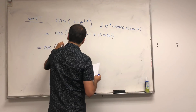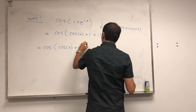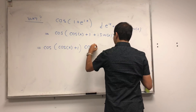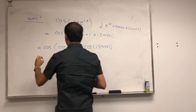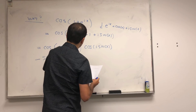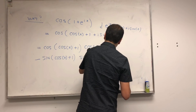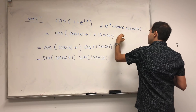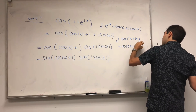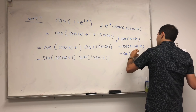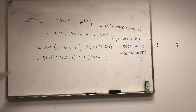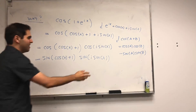So let's just use the sum law for cosine. That's the same thing as cosine of cosine of x plus 1, cosine of i sine of x, minus sine of cosine of x plus 1, sine of i sine of x. That's just cosine of a plus b, which is cosine a cosine b minus sine a sine b — just like the double angle formula for cosine has cosine squared minus sine squared.